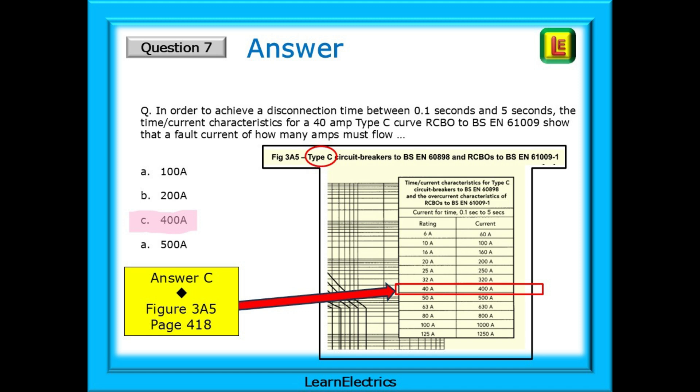Once you are in appendix 3, follow the headings at the top left of each page and search for figure 3A5, which is on page 418. You now have the table for type C as shown on this slide.